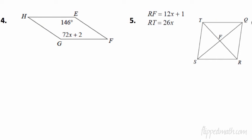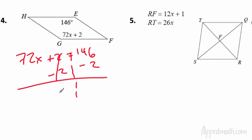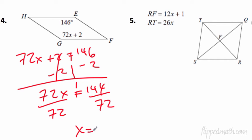So number four. Four is easy. Look at that. It doesn't get any easier than this. Opposite angles. They're congruent. So let's set it up. 72X plus 2 equals 146. We subtract 2 from each side. They cancel. We get 72X equals 144. We divide each side by 72. I know I'm going quick here, but we should know how to solve these equations by now.